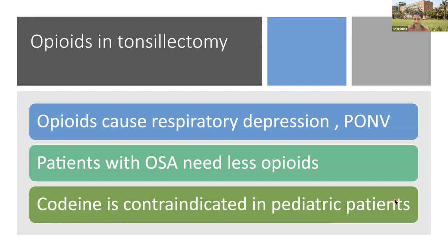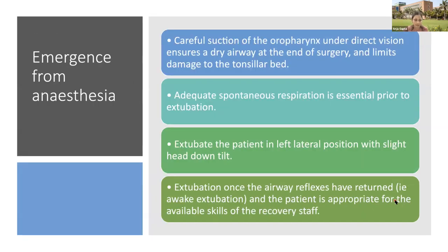Codeine is contraindicated in pediatric patients because some children are rapid metabolizers of codeine — unknown to us — and there have been case reports where codeine use led to respiratory arrest in the postoperative period and some mortality reports. WHO and other bodies have stated that codeine should not be used for postoperative analgesia in pediatric patients, though it was rampantly used previously. In rapid metabolizers, codeine is rapidly metabolized to morphine, which can lead to a very high plasma concentration of morphine.